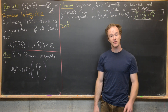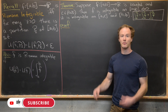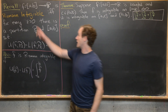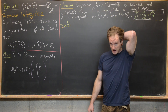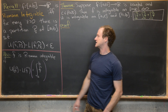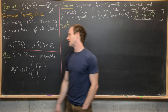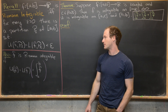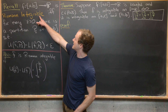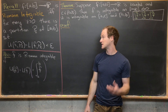In the last few videos we've been looking at integrability, specifically Riemann integrability, and we want to look at a couple properties of the Riemann integral in this video. Before we do that, let's recall a couple of things. A function from the interval [a,b] to R is Riemann integrable if and only if for every epsilon greater than zero there is a partition P_epsilon of [a,b] such that the upper sum of f on that partition minus the lower sum is less than epsilon.